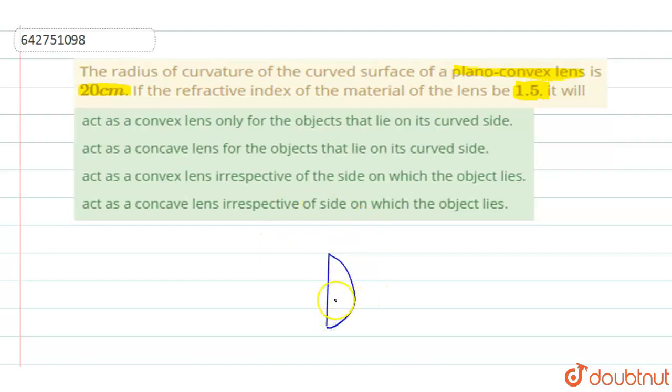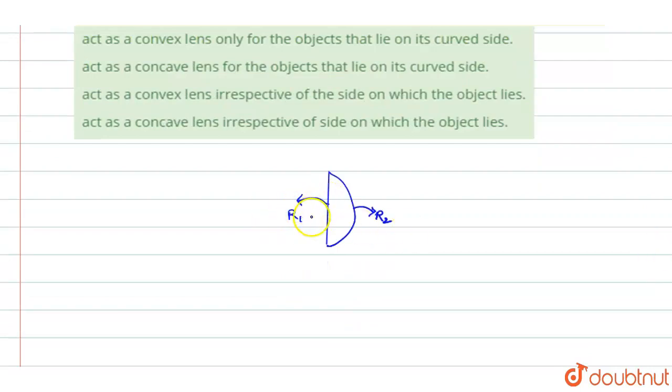This is a plano-convex lens with two surfaces labeled R1 and R2. The R1 and R2 assignments vary depending on where the object lies. If the object is on the left side, this becomes R1 and this becomes R2. If the object is on the right side, the assignments reverse.